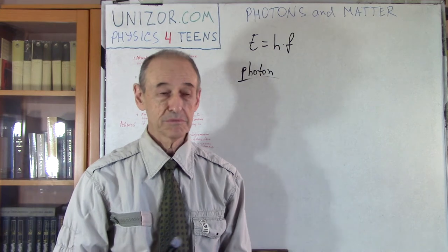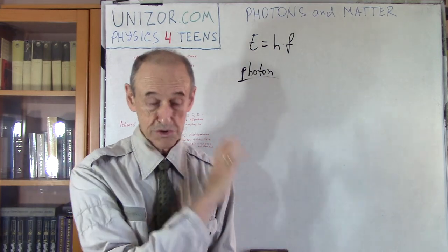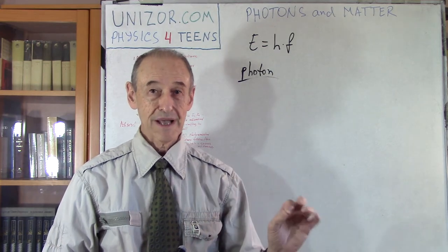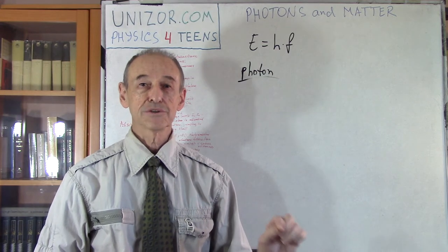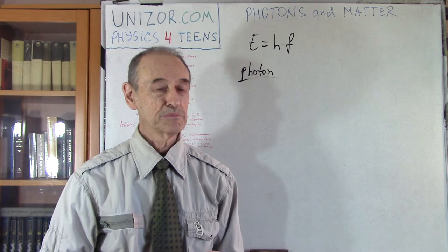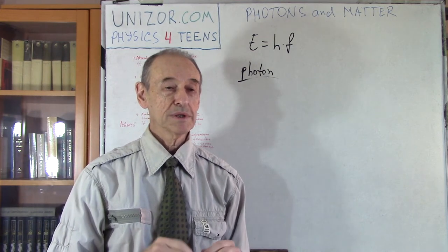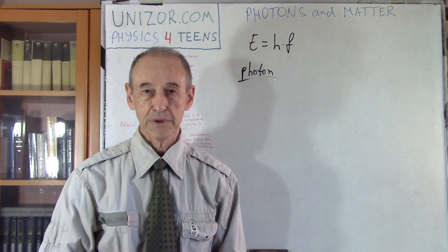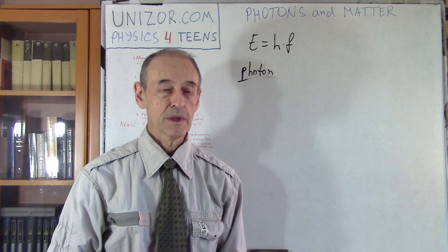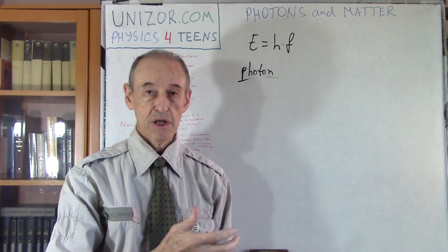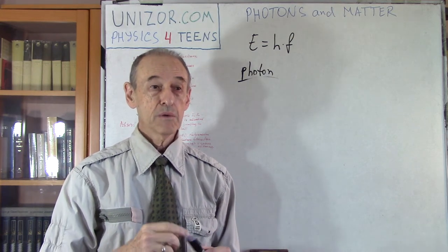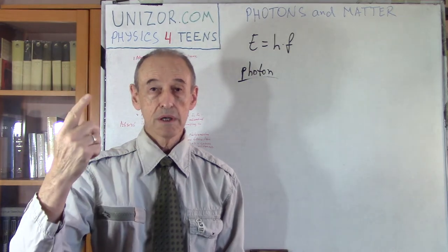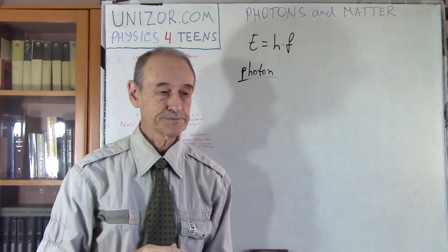Actually, it does have something to do with reality because of quantum theory, which is not actually part of this course. Basically, it's one of the things that tells you that you cannot really tell exactly where, at some moment in time, an electron is and what its speed is — there is a certain principle behind this. In any case, let's just consider the word shell: electrons are on shells. This is the more appropriate, contemporary terminology.